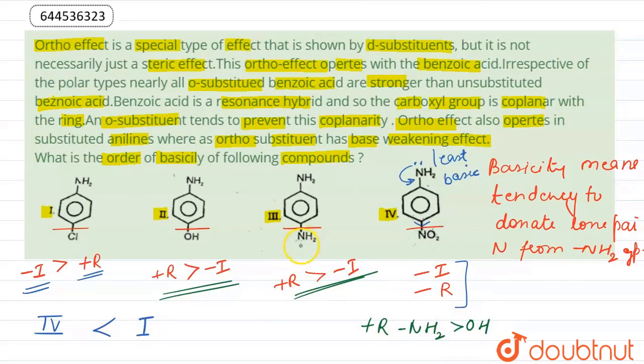Because here lone pair is present on nitrogen, and here electrons are present on oxygen. Oxygen is more electronegative, so the tendency to shift electrons towards benzene is more in case of NH2. So plus R effect is more in case of NH2.